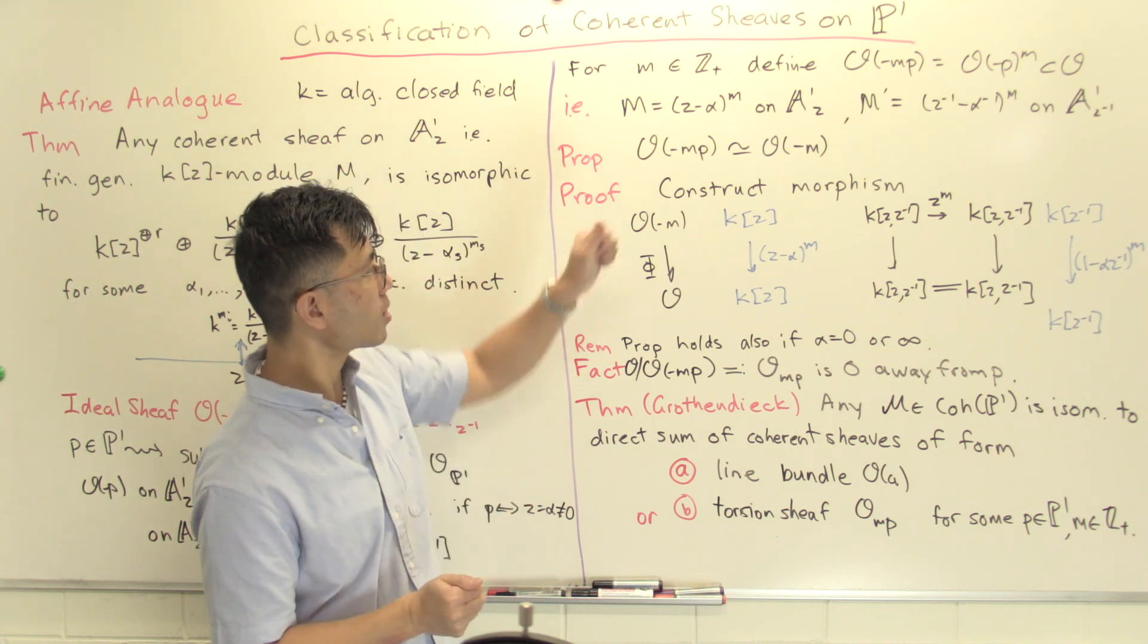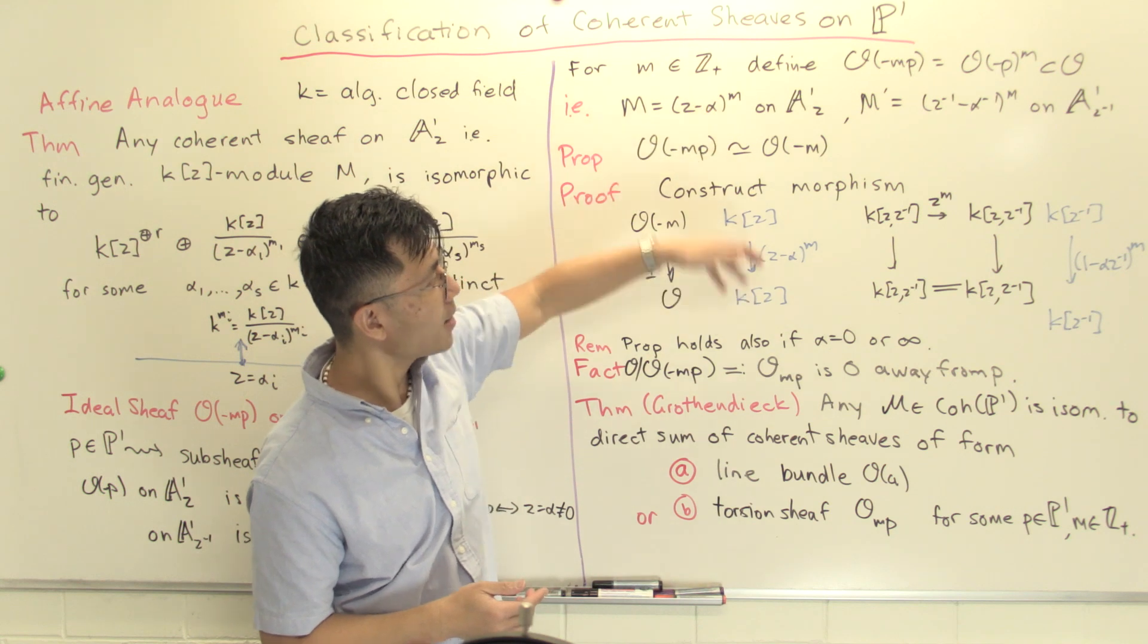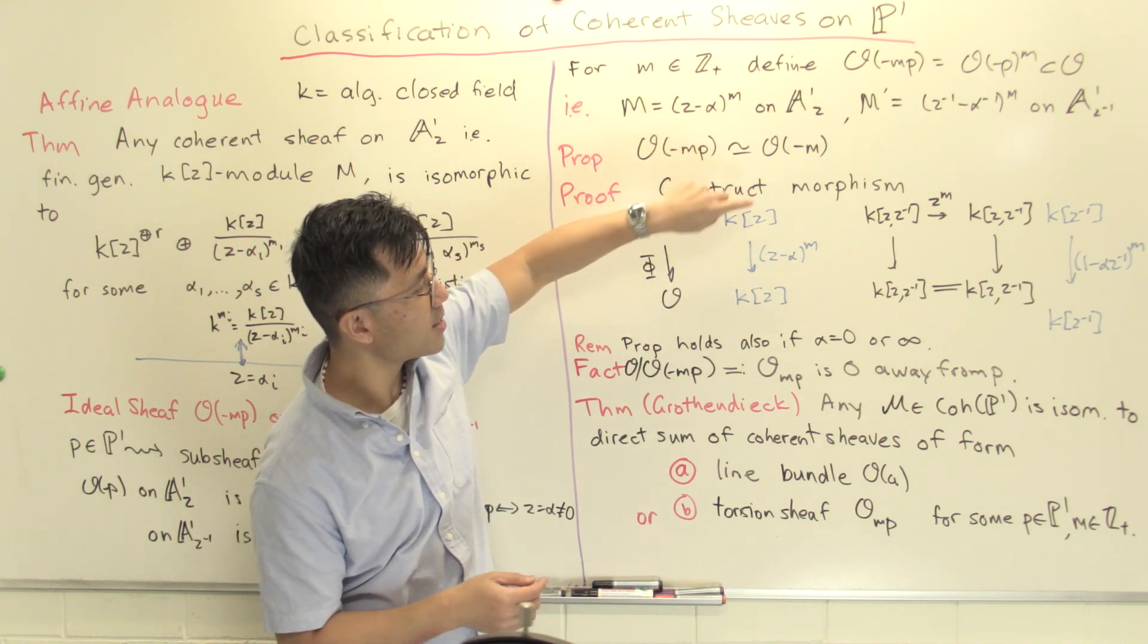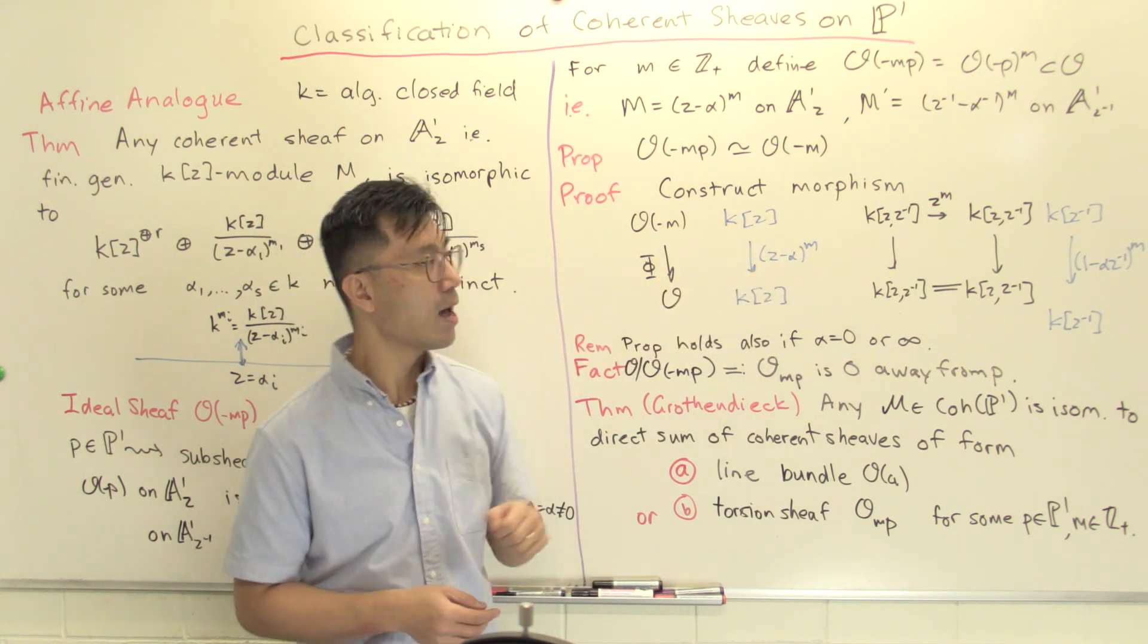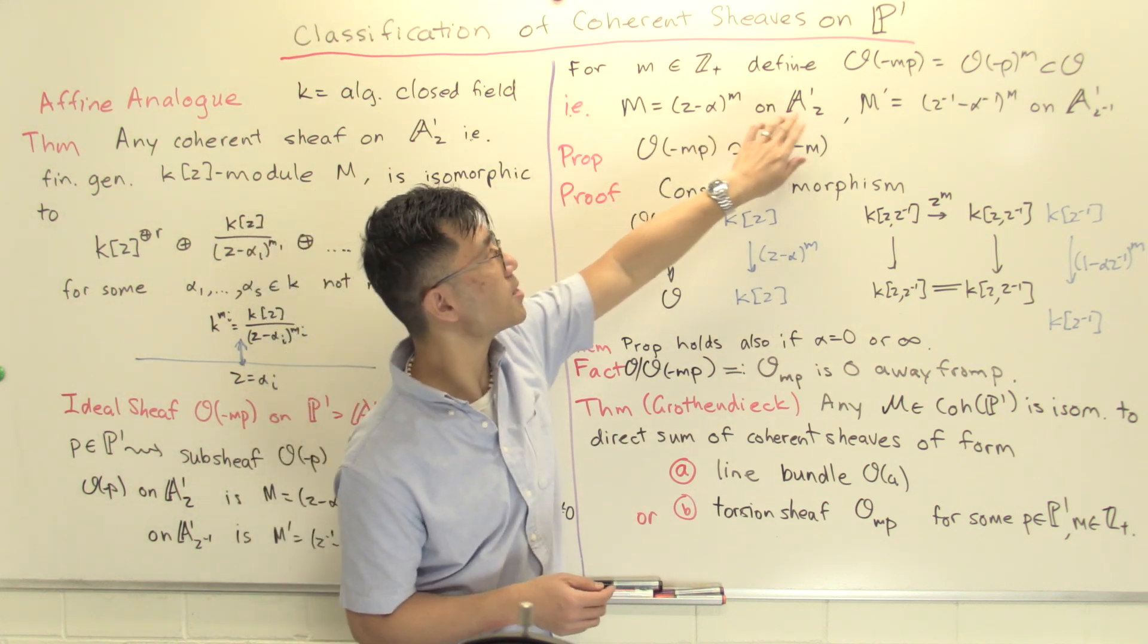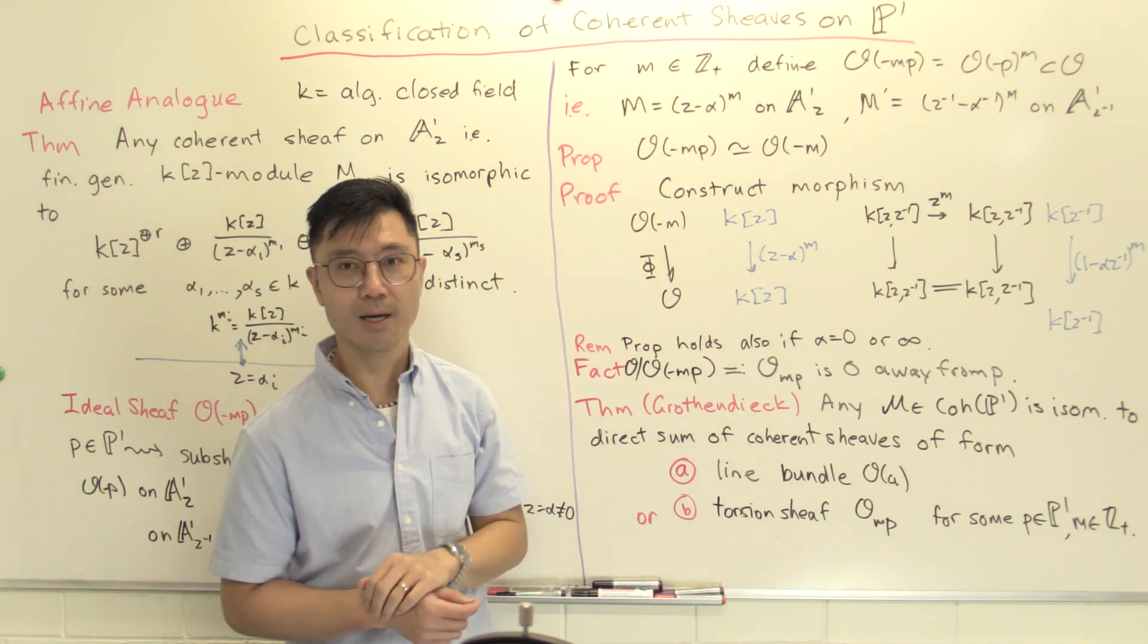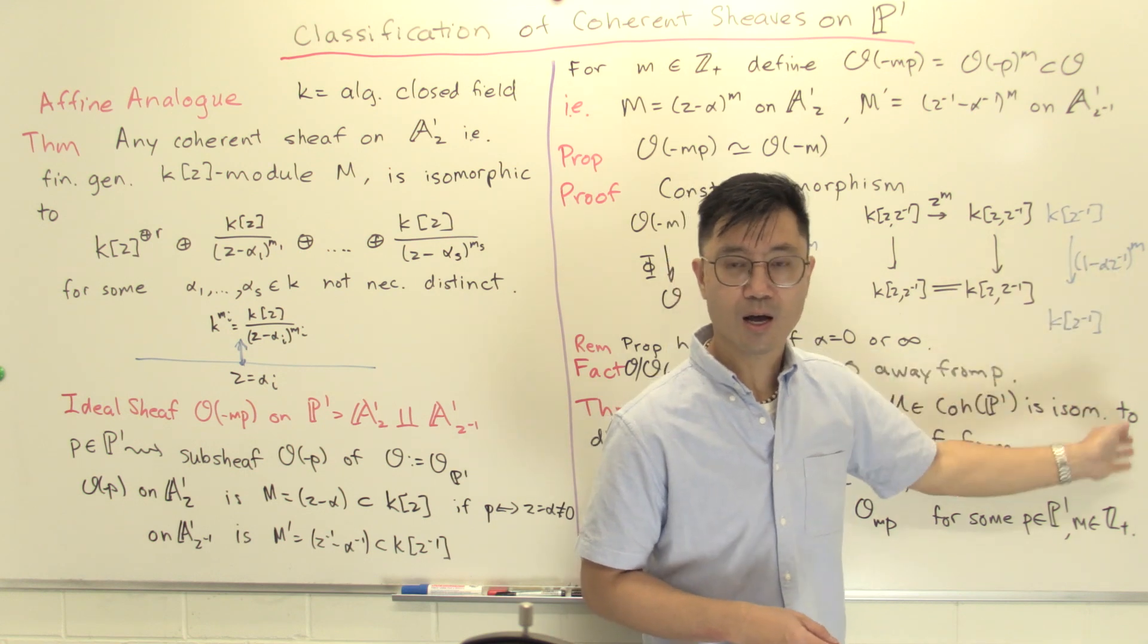Let's see what we have to do. We need a map on the A1_Z part. That's a homomorphism K[Z] to K[Z], and I'm just going to multiply by (Z-α)^m. It's clear that the image here is O(-mp) restricted to A1_Z because that's given by the ideal (Z-α)^m.